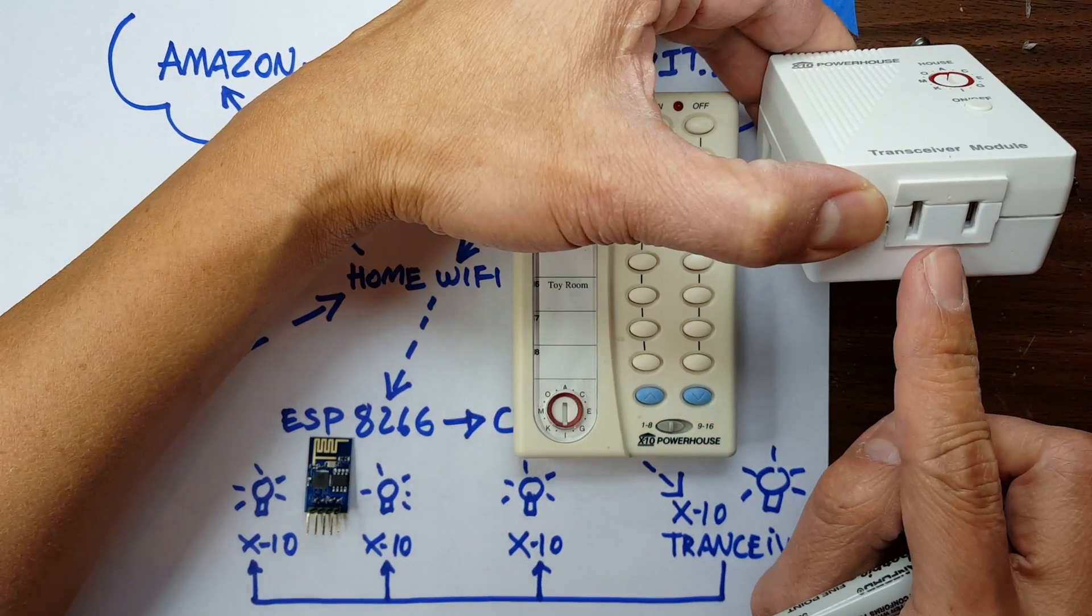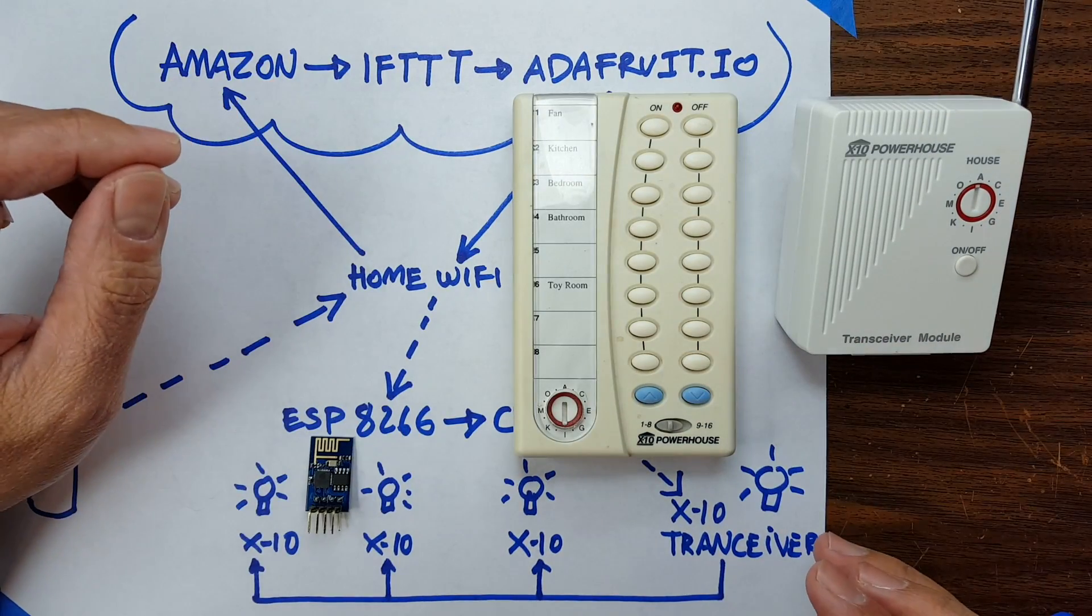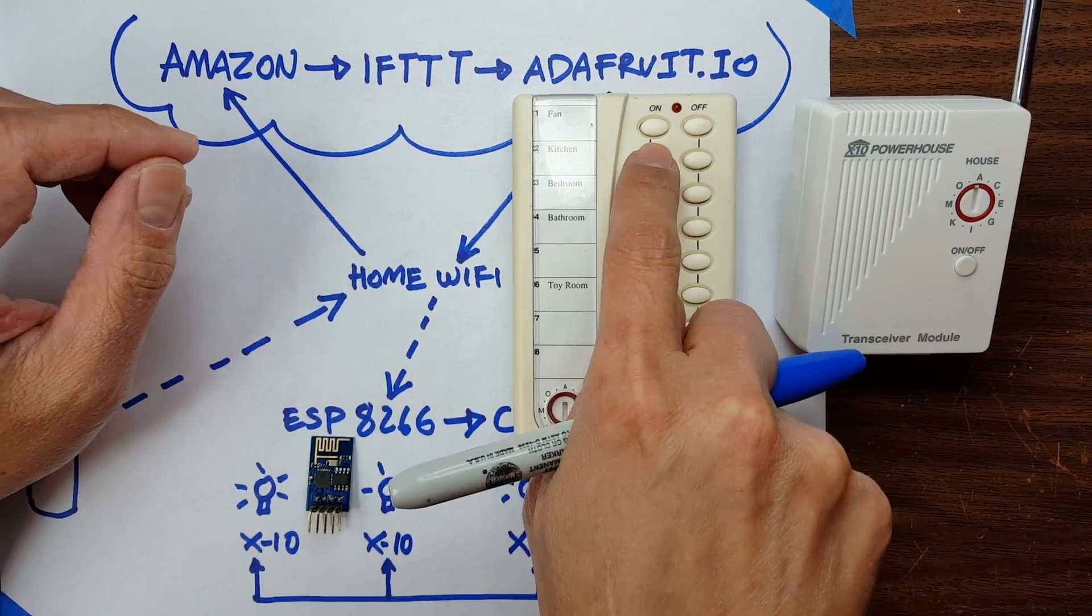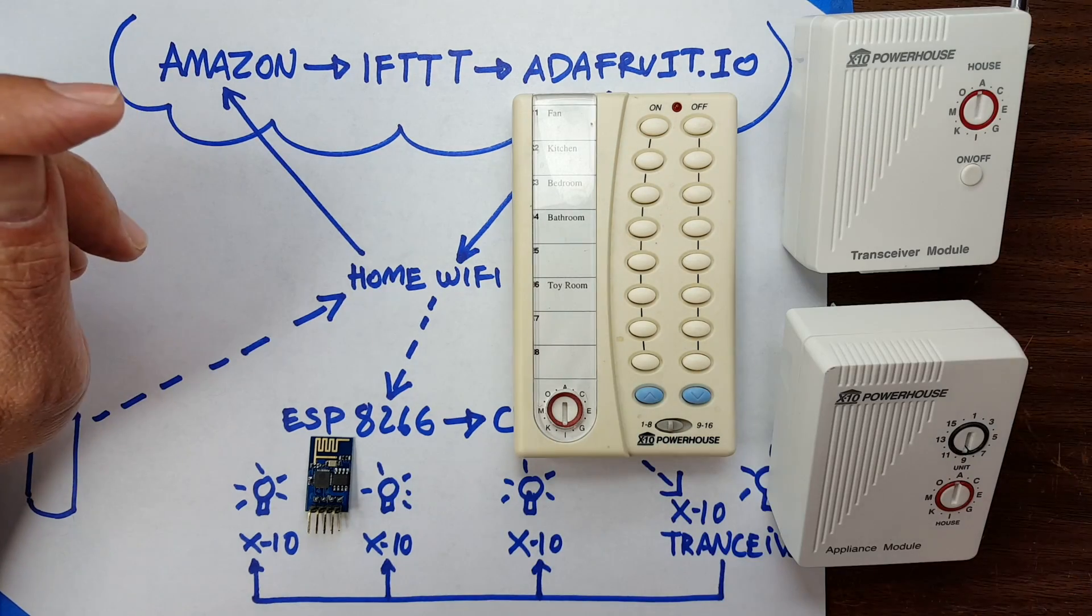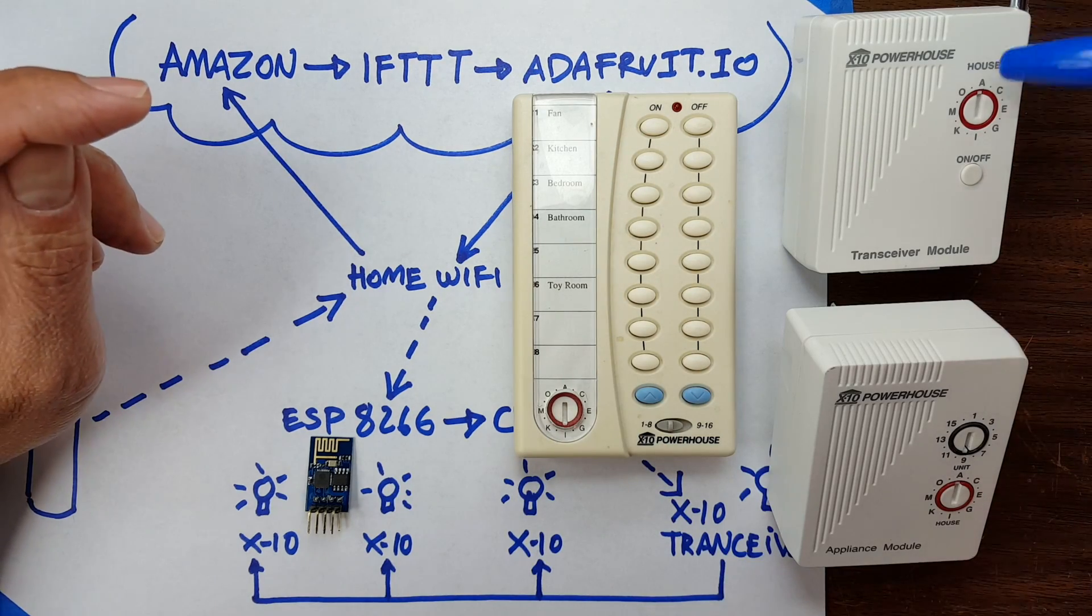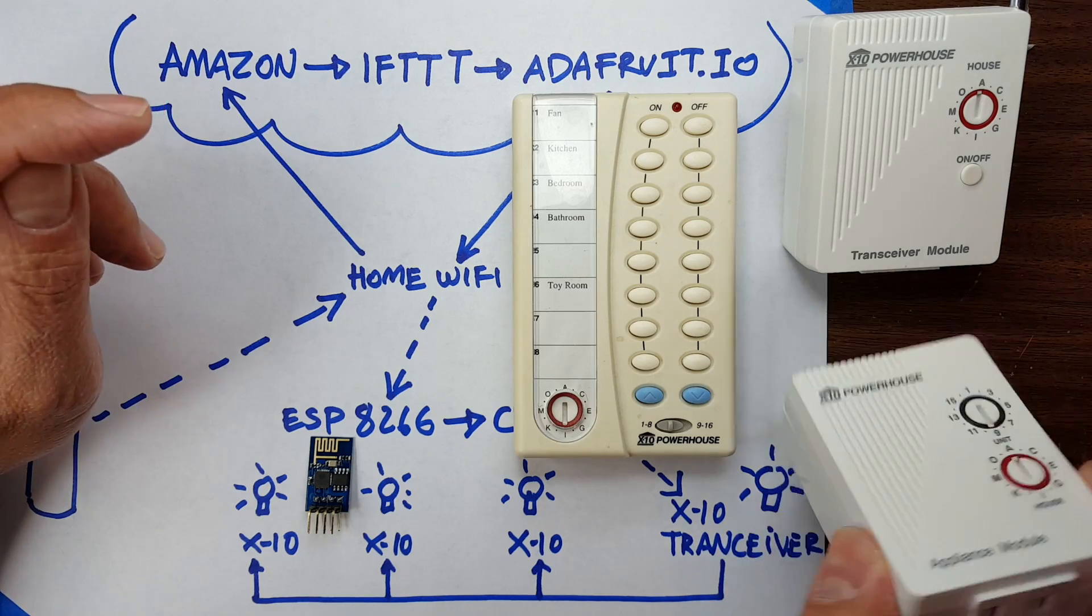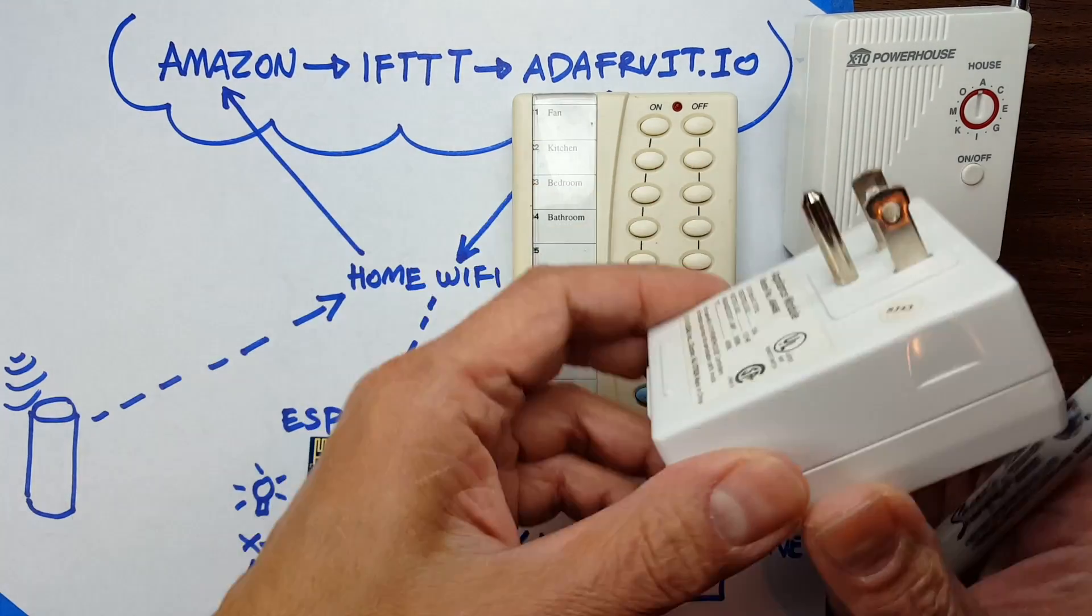The interesting thing happens when I press button number two—it's not this unit. It's simply passed through from here to here. Notice that this one doesn't have an antenna, unlike this one that has an antenna. The second one does not have an antenna.